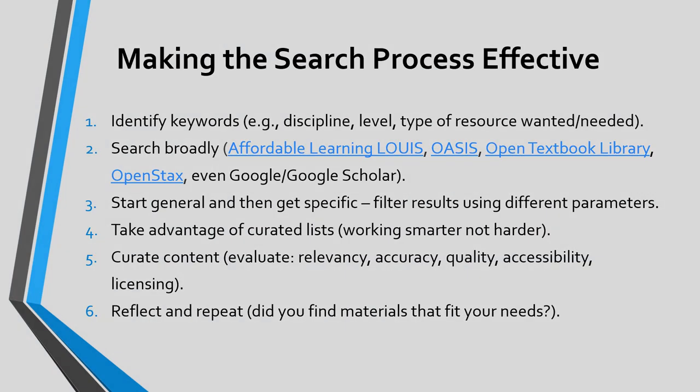The key to any good search when attempting to find resources is optimizing and making the search process effective. Step one: identify your keywords, your discipline, level, and type of resource wanted or needed. Step two: search broadly, using repositories like Affordable Learning Louisiana, OASIS, Open Textbook Library, OpenStax, and even Google and Google Scholar.